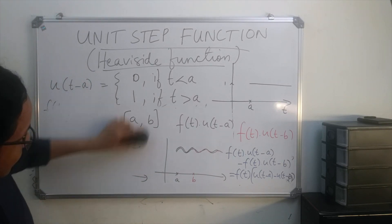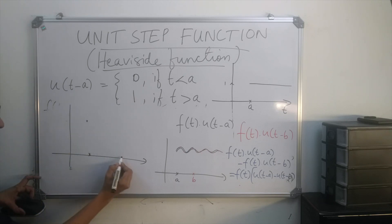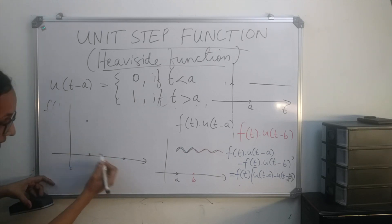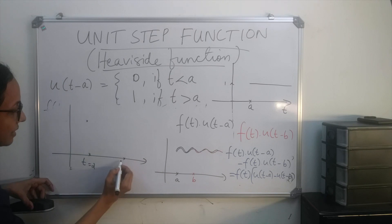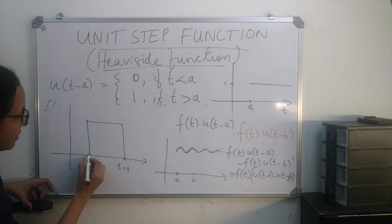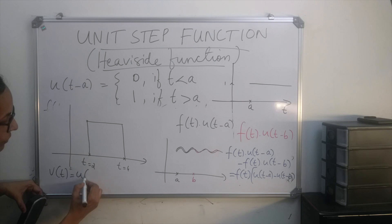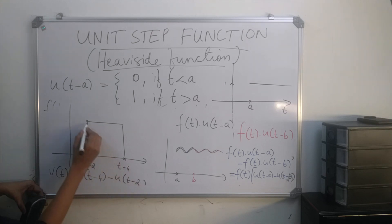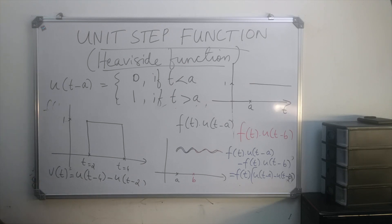For example, consider a certain voltage applied at time t = 2 and removed at time t = 4. We can represent this rectangular pulse with the help of unit step functions. If the voltage value is 1, we can write it as u(t − 2) − u(t − 4).